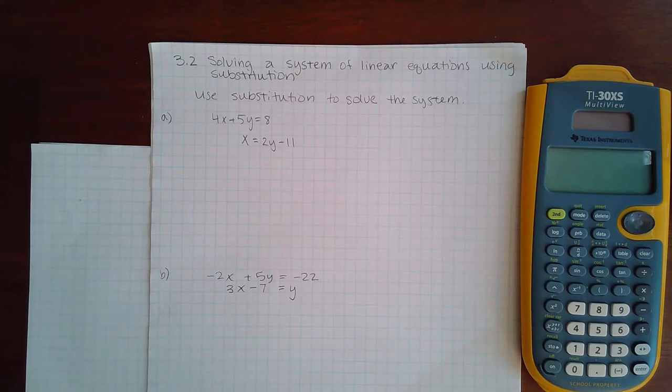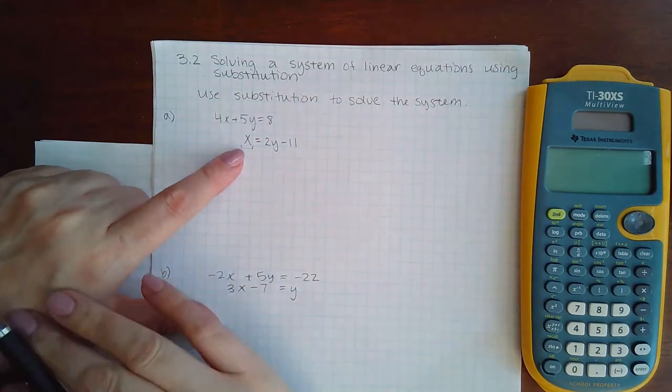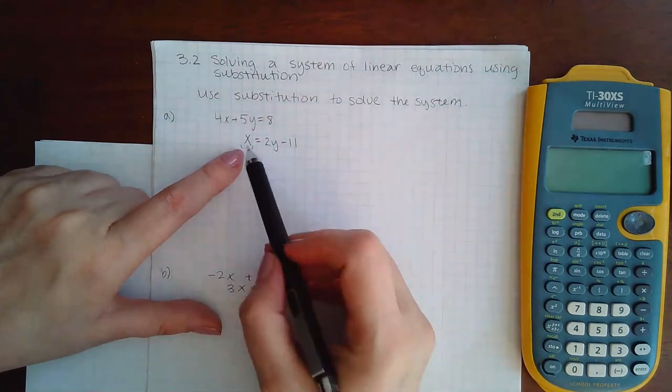Once you have one variable isolated, you now have an expression that can represent that variable. Then you can use that expression in the second equation to help you solve the system. For instance, here I have the variable x that is already isolated, and this equation is saying